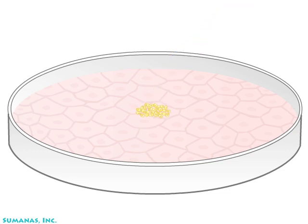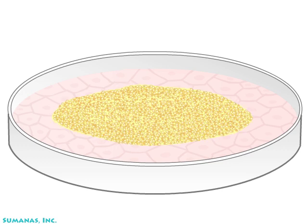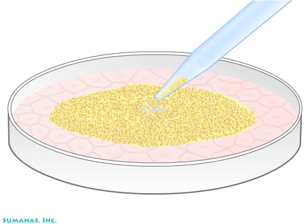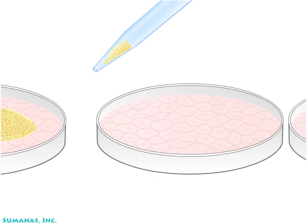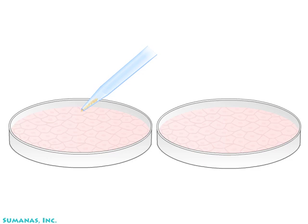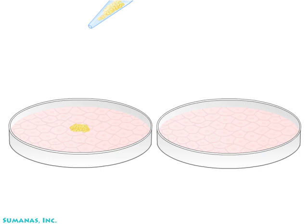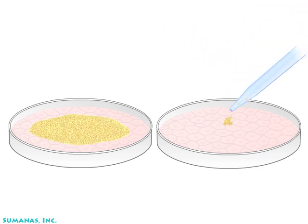The second key feature of embryonic stem cells is their ability to self-renew indefinitely while retaining their undifferentiated pluripotent state. Small groups of cells are placed in petri dishes to divide. Cells from a single petri dish can seed many petri dishes. In this way, unlimited numbers of undifferentiated pluripotent stem cells can be produced.